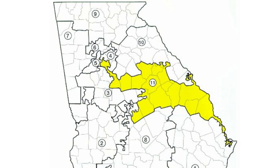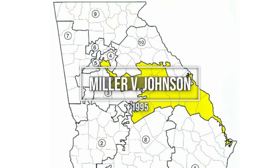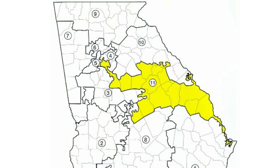Likewise, Miller v. Johnson was a 1995 U.S. Supreme Court case that challenged the constitutionality of a Georgia redistricting plan. The plan had been designed to create a majority-minority district in the state's congressional delegation by combining predominantly Black American areas in the state. The case established that race cannot be a predominant factor in creating a district and that redistricting plans must be subject to strict scrutiny to ensure compliance with the Equal Protection Clause of the 14th Amendment.